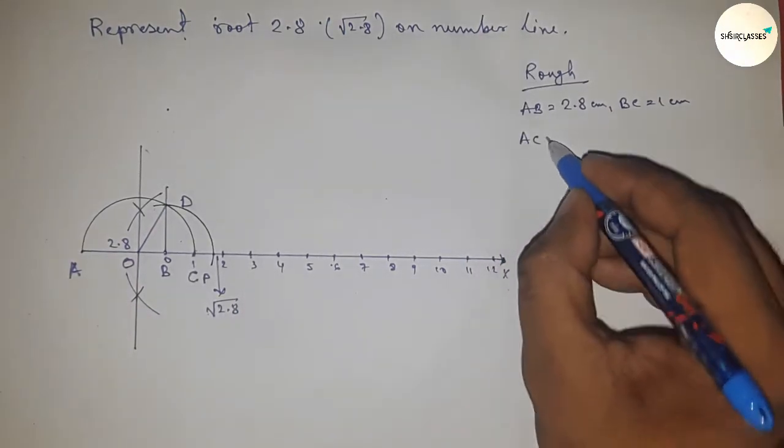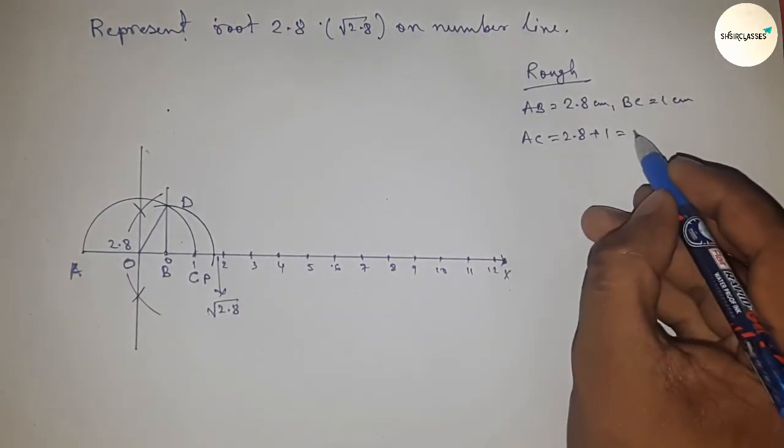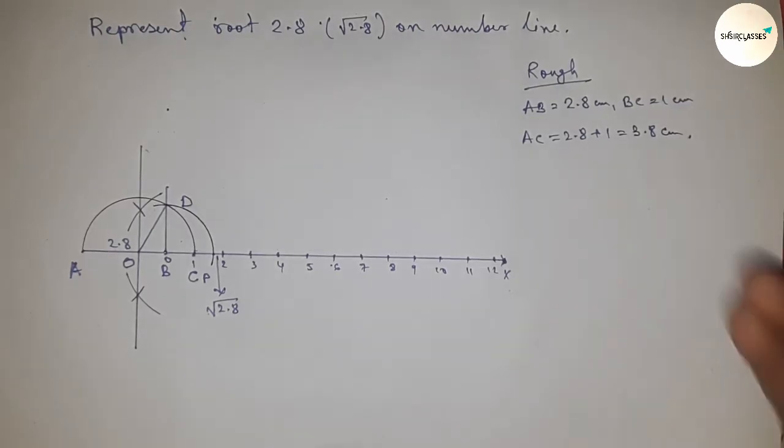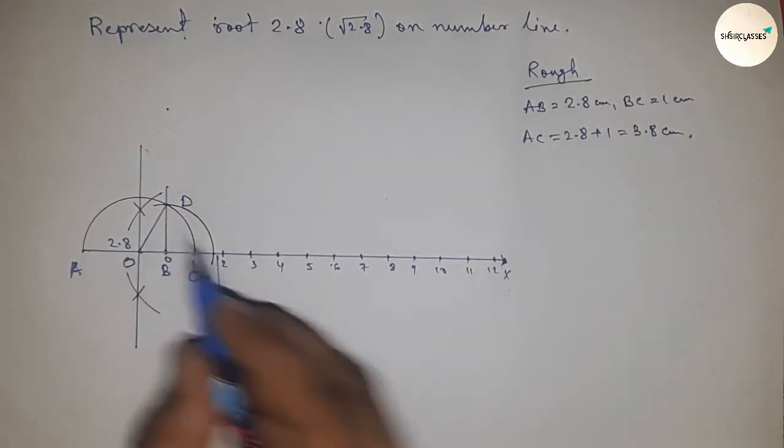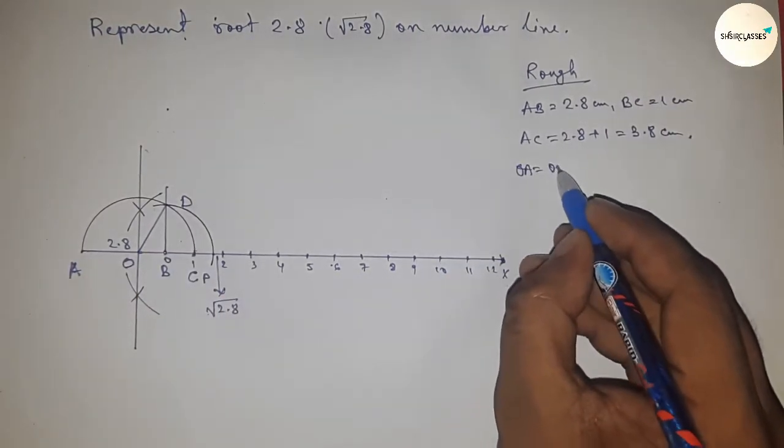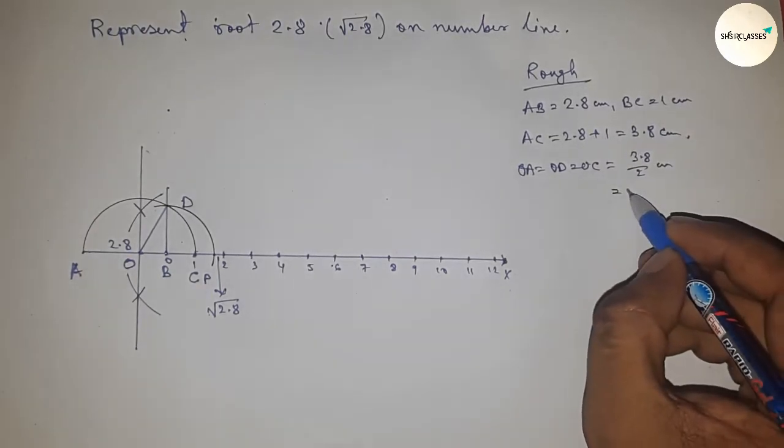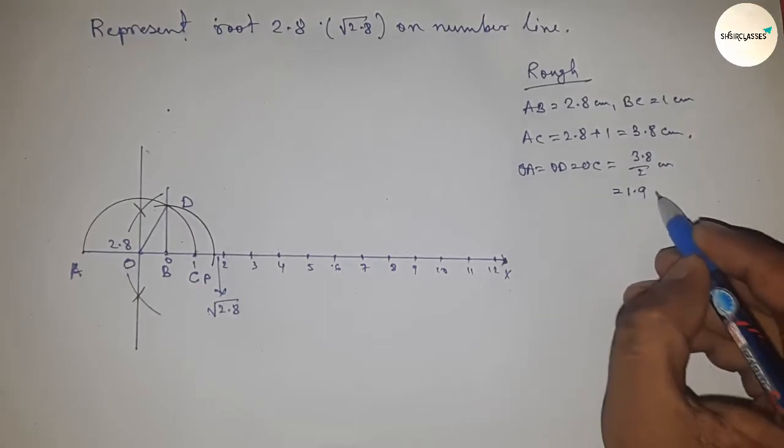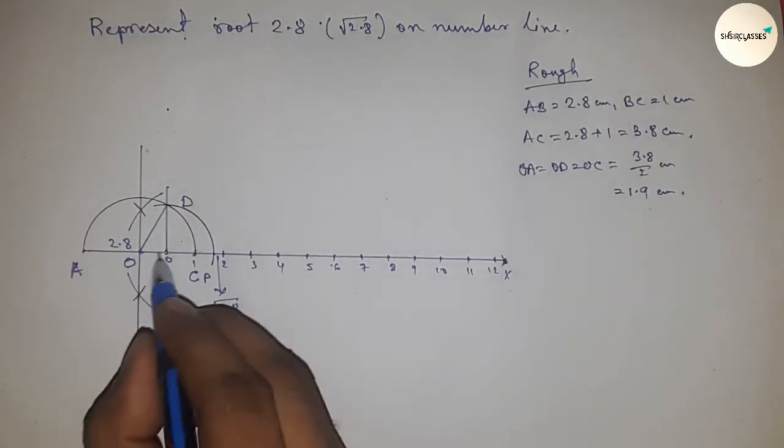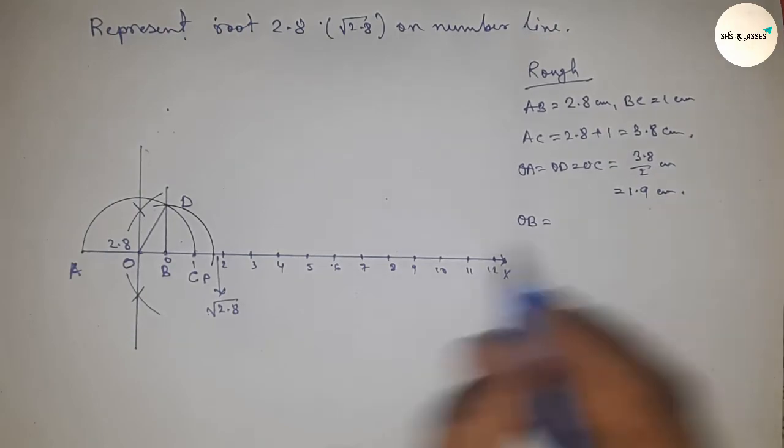We can write AC = 2.8 + 1 = 3.8 cm. The radius OA = OC = OD = 3.8/2 = 1.9 cm. Next, OB = OC - BC. Putting the values, OB = 0.9 cm.